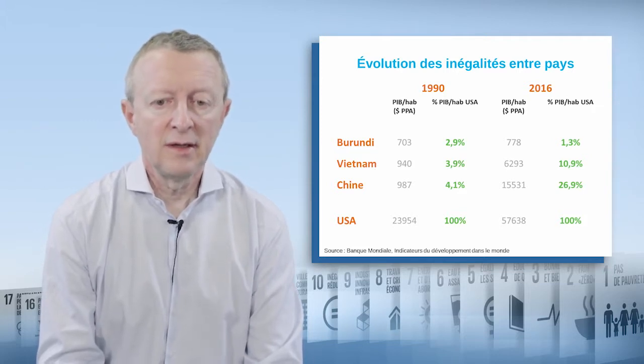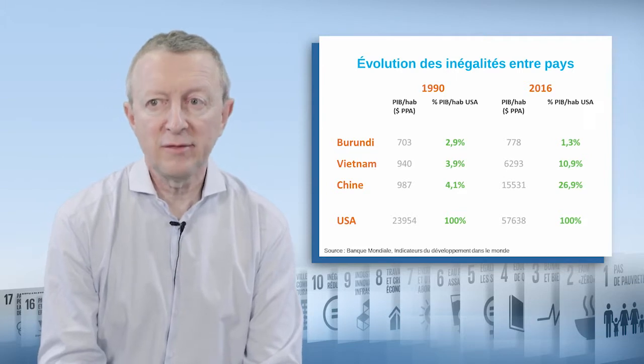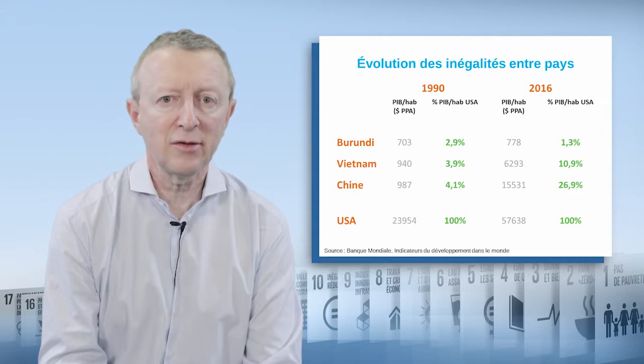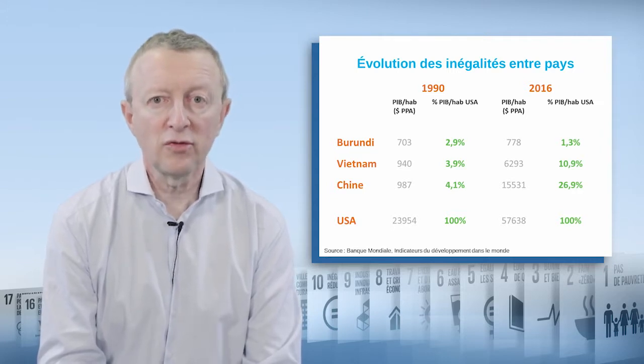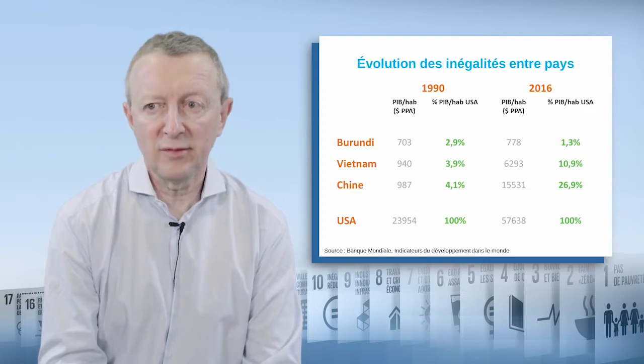The evolution in Vietnam is the reverse of that. And the catch-up of China is quite spectacular: the average living standard of a person in China in 1990 was 4.1% that of an American, and in 2016 it's almost 22%. The Gini index measures the gap in comparison to a situation of perfect equality — zero for perfect equality and 100 for perfect inequality. It varies between 25 and 65 from one country to another; it's 31 in France and 41 in the US, and the most unequal countries are in Latin America and Sub-Saharan Africa.